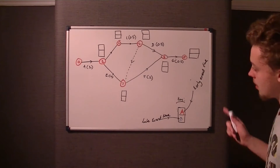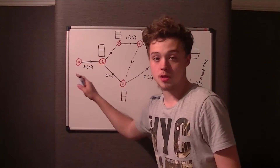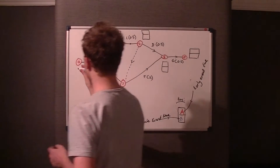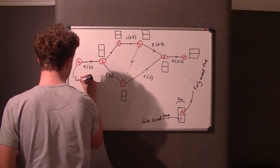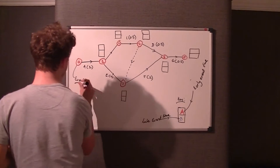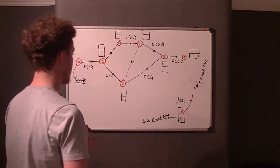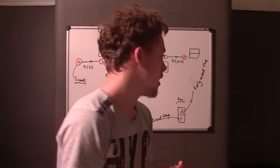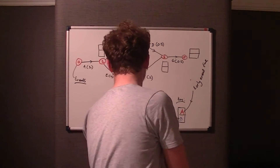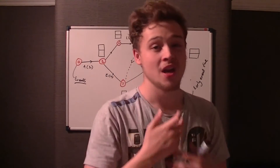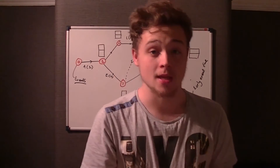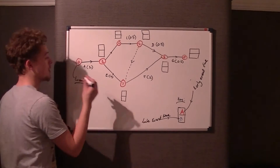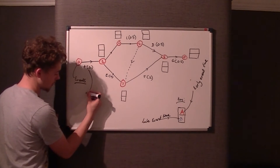The nodes — the circled ones — with numbers in them are called events. Between event zero and event one you'll have something starting, and what starts is called the activity.